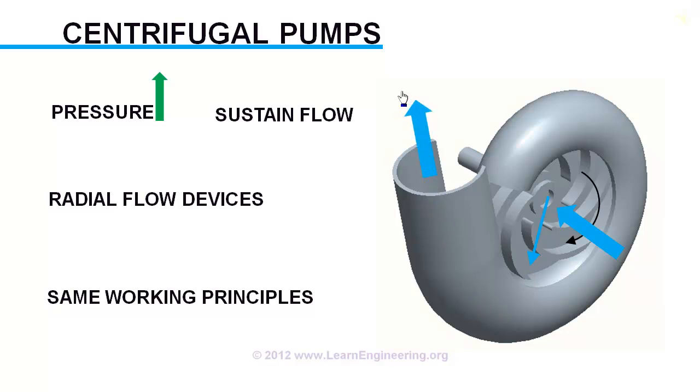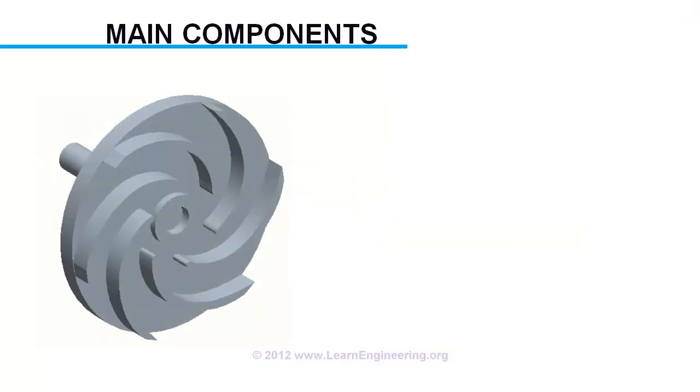We will go through main components of a centrifugal pump in a detailed way. First, impeller. Impeller is the device which rotates and transfers energy to fluid. It has got collection of vanes fitted to a hub plate.